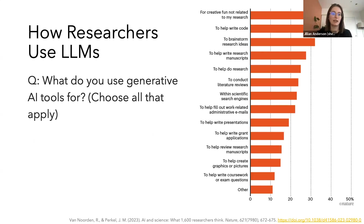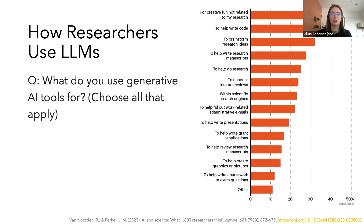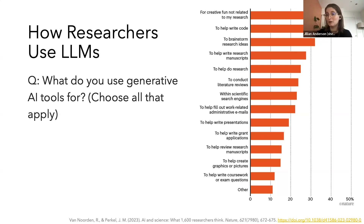There was a survey done by Nature in September 2023 — so about six months old and probably a little out of date given how quickly the field is evolving — but when it surveyed 1,600 researchers asking how they're using generative AI, responses included: helping write manuscripts, brainstorming research ideas, writing code, and writing presentations. The reality is there's quite a wide variety of use cases.